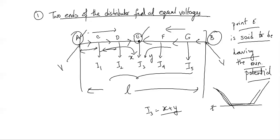Suppose the current supplied by feeding end A is IA. The current in section AC is IA, in section CD it is IA minus I1, in section DE it is IA minus I1 minus I2, and in section EB it is IA minus I1 minus I2 minus I3.